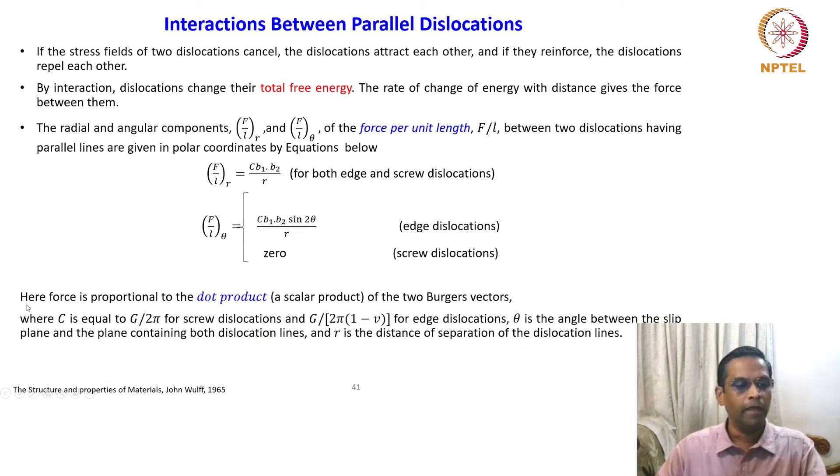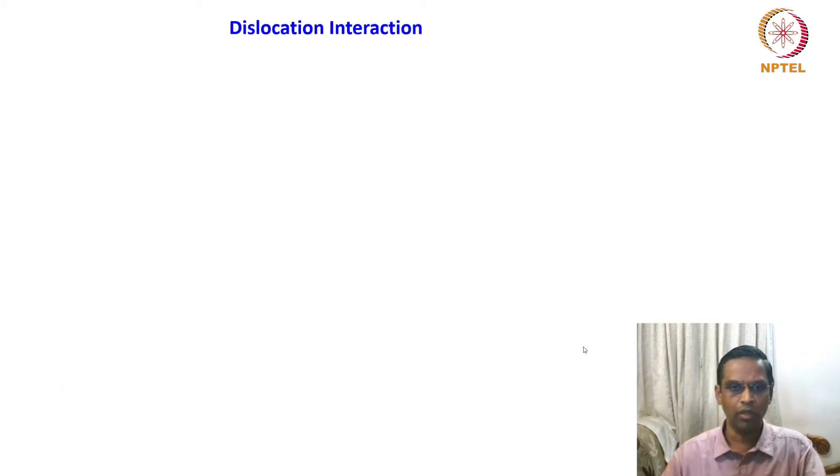As we mentioned in the previous class, the force is proportional to the dot product here because we assume it is confined to a single plane. C is a constant which equals g by 2 pi for a screw dislocation and g by 2 pi times 1 minus u for edge dislocation. We have enough background to recognize these elastic constant modifications because of the plane problems that we have already mentioned twice. Theta is the angle between the slip plane and the plane containing both dislocation lines. R is the distance of separation of the dislocation lines. The whole thing we have already seen once, but it is nice to recall this again.